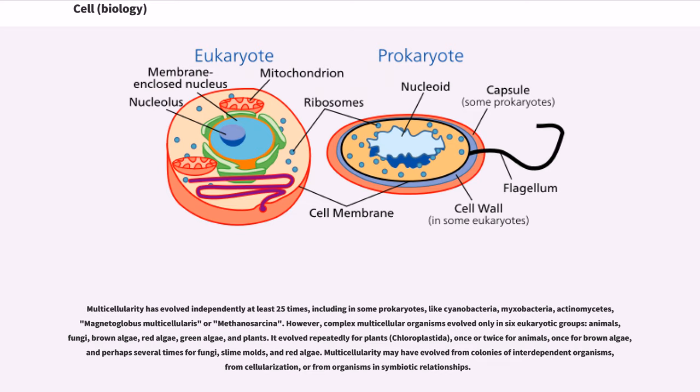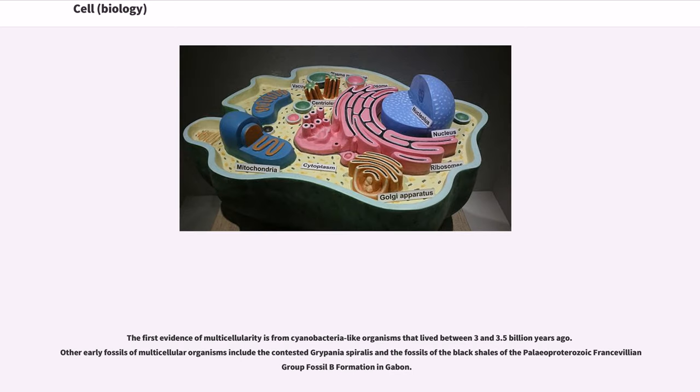Multicellularity may have evolved from colonies of interdependent organisms, from cellularization, or from organisms in symbiotic relationships. The first evidence of multicellularity is from cyanobacteria-like organisms that lived between 3 and 3.5 billion years ago. Other early fossils of multicellular organisms include the contested Grypania spiralis and the fossils of the black shales of the Paleoproterozoic Francevillian Group fossil B formation in Gabon.